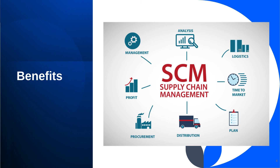Overall, supply chain management is a critical component of industrial management that enables organizations to optimize resources, mitigate risk, and deliver value to customers effectively. By adopting best practices and leveraging advanced technologies, industrial organizations can achieve operational excellence and sustain long-term success in today's competitive business environment. Key advantages include cost reduction, improved efficiency, enhanced customer satisfaction, inventory optimization, risk mitigation, strategic supplier relationships, regulatory compliance, and competitive advantage.